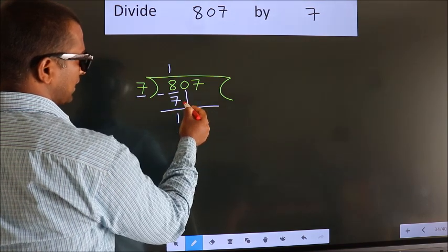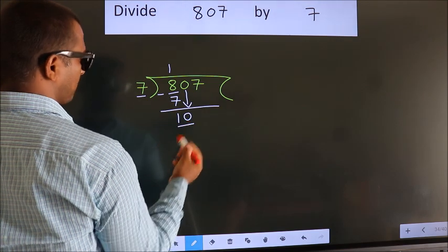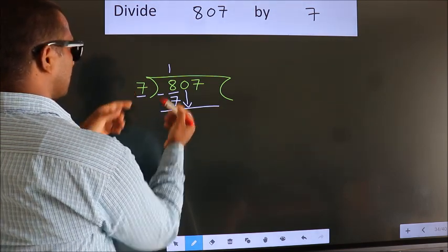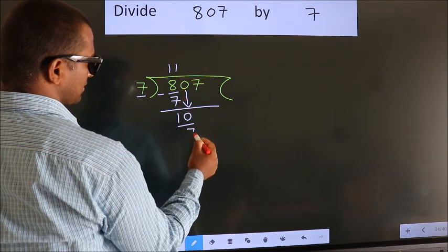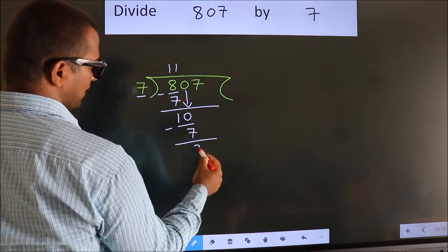After this, bring down the beside number. So 0 down. So 10. A number close to 10 in 7 table is 7 once 7. Now we subtract. We get 3.